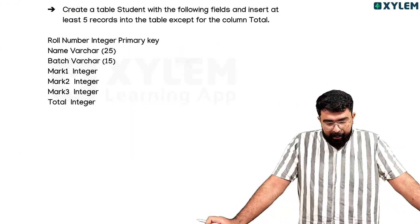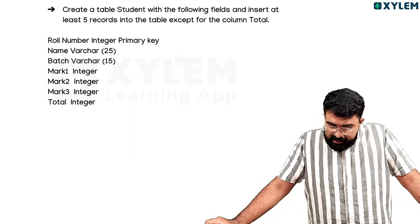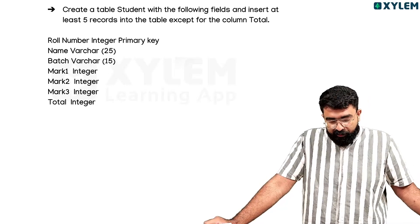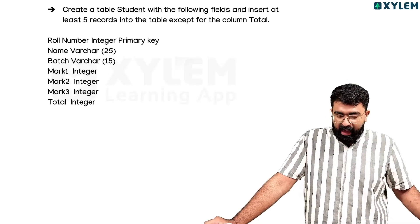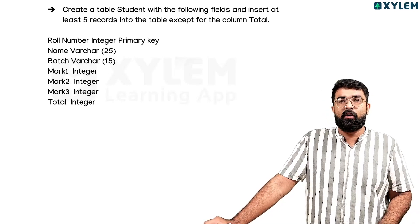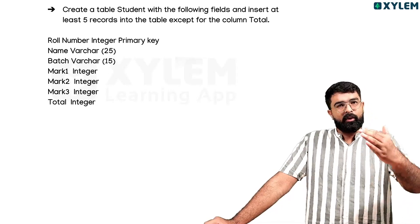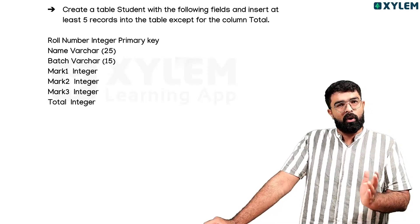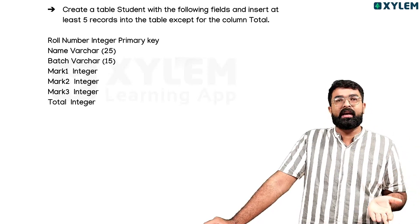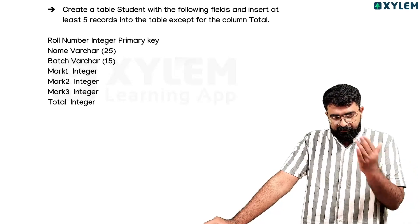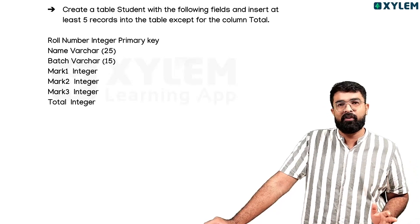Create a table called 'student' with the following fields and insert at least five records into the table except for the column 'total'. The columns are: roll number as integer and primary key, name as varchar of 25, and batch as varchar of 15.